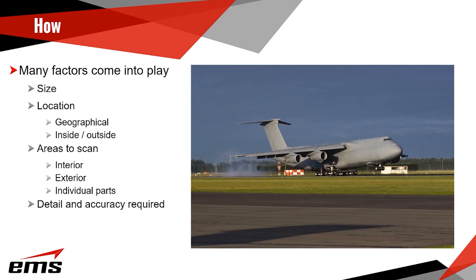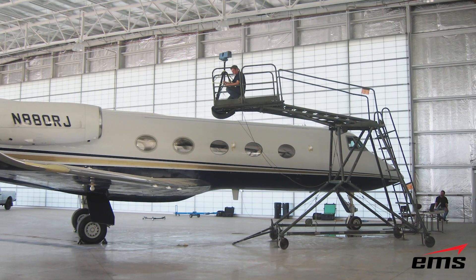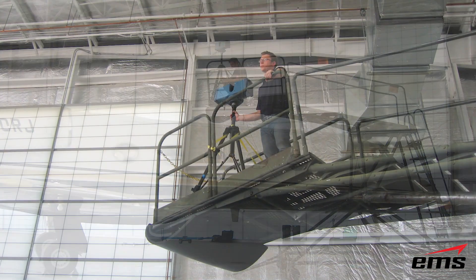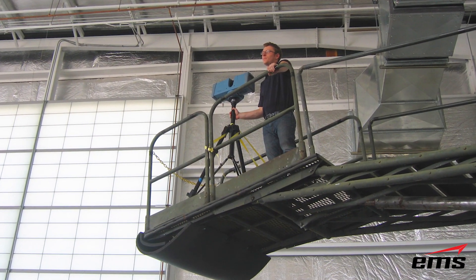How is an aircraft actually 3D scanned? The first thing you need to do is look at many different factors. First is size — the bigger the aircraft, the more complicated it gets, the more equipment, the more people, and the more ancillary equipment that might be required. In addition, location becomes important: how far away is it, and is the aircraft stored inside a climate-controlled hangar or outside on a tarmac?